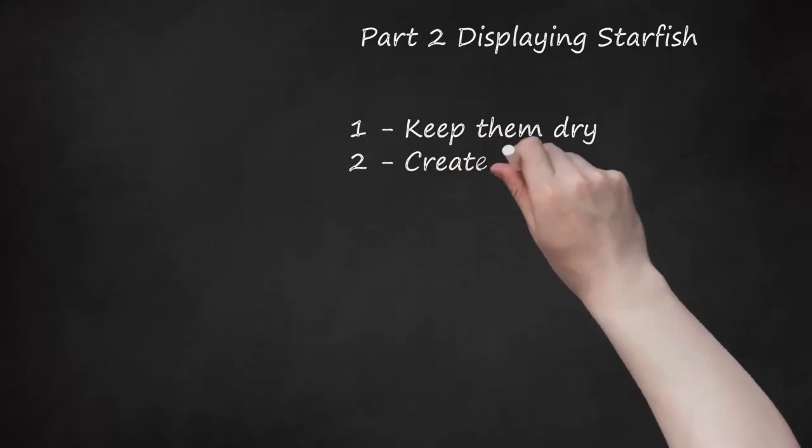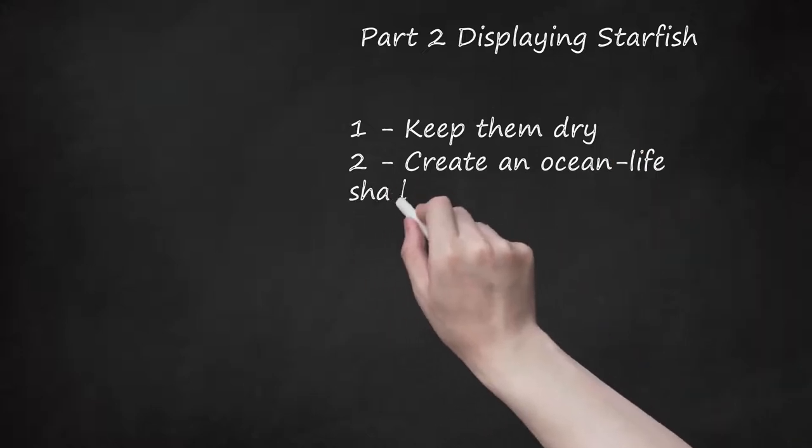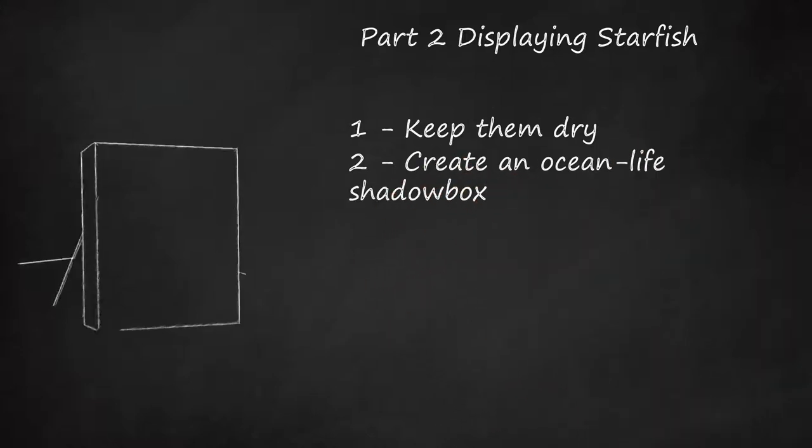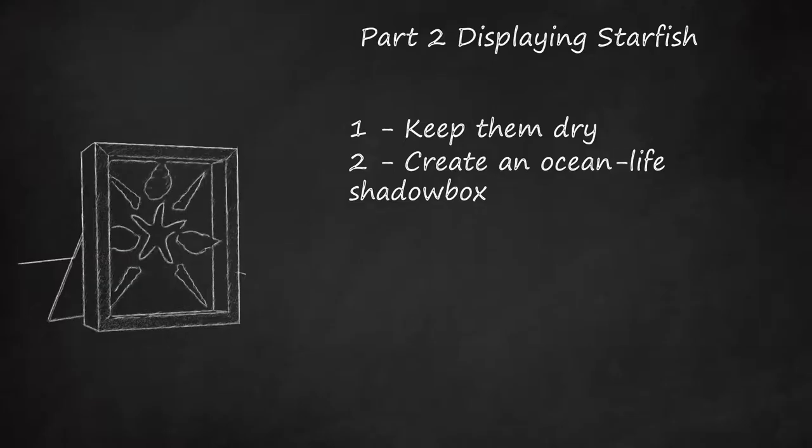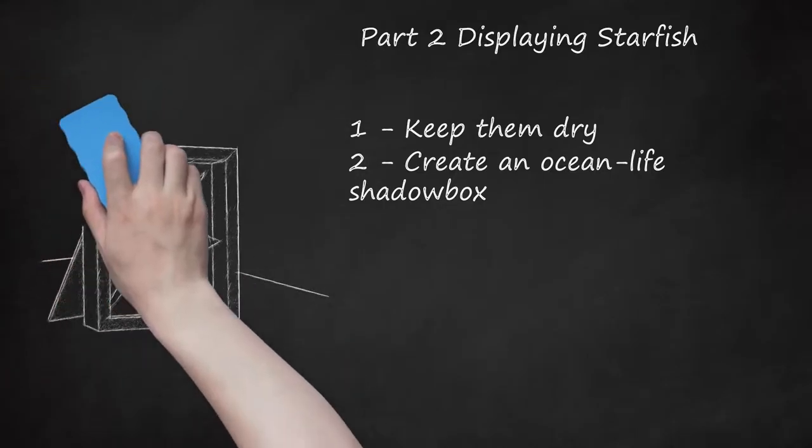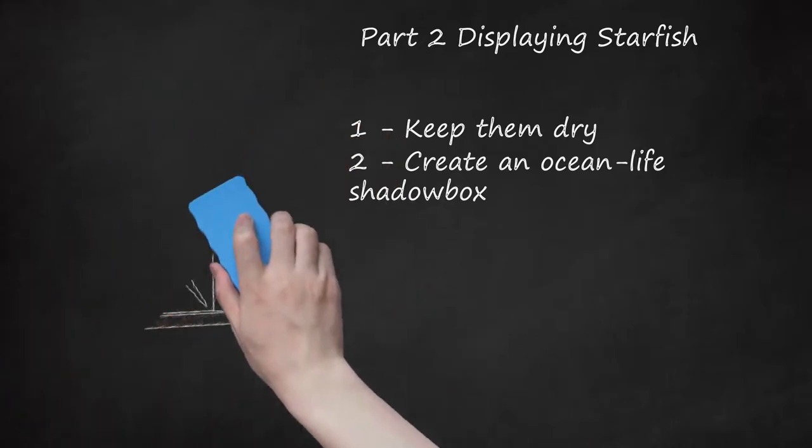Step 2: Create An Ocean Life Shadowbox. A common way to display starfish is alongside other shells, urchins, sand dollars, and driftwood in a decorative shadow box. This can be a nice accent to an office, living room, or other space, especially in houses near the beach.